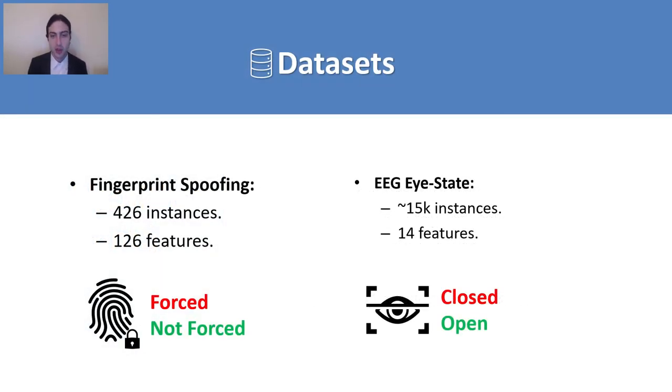All right, so to do the testing, we've picked two separate datasets. One is fingerprint spoofing. We made this dataset in another work accepted in this conference. It has 426 instances, lower number of instances, but high number of features, 126. Two classes, forced or not forced, so it's a binary problem. And we have another dataset, EEG eye state, which also is a binary problem. These states are closed or open for the eyes. It has 15,000 instances and only 14 features. This one is much more difficult for normal DNNs, as we'll show later, due to the small number of features and their nature, where the numbers are really hard to tell apart.